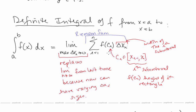Here delta x i is the width of the i-th subinterval, which can potentially vary. That gets multiplied by the height f of c i, where c i is some point in the i-th subinterval. We're summing up these areas for n rectangles and letting the number of rectangles go to infinity. Because we have varying subinterval sizes, what we really need is that the largest subinterval size goes to 0. This is our definition for the definite integral of f of x over the interval a to b.